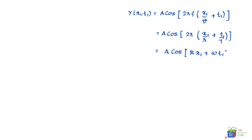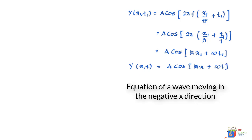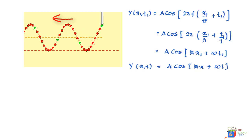And we know this can also be written as equal to A cos 2π times x upon lambda plus t upon T. And I'm sorry, this should be x₁, this should be t₁. Which in turn is equal to A cos(kx₁ + ωt₁). And if you substitute x as a more general form of the equation in this equation we've just derived, what you'll get is y(x,t) is equal to A cos(kx + ωt). So this is the equation of a wave moving in the negative x direction.